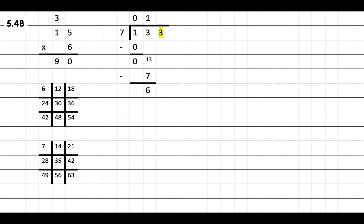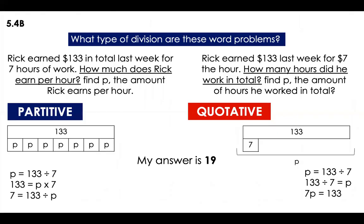Six minus zero is zero, so I have a remainder of 6. Bring down the next number: the 3. Now I'm dividing 63 by 7 — how many groups of 7 fit into 63? One, two, three, four, five, six, seven, eight, nine. Nine groups of 7 equals 63. I subtract: 63 minus 63 equals zero. My answer is 19.